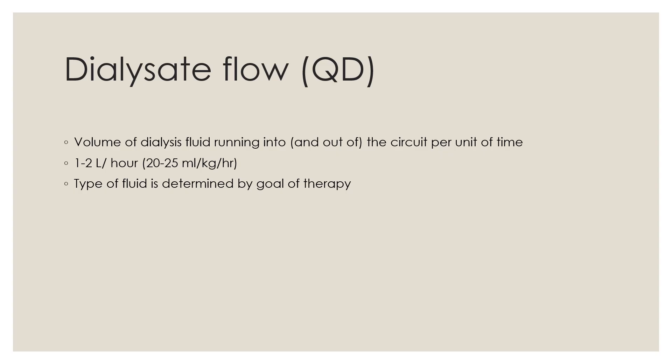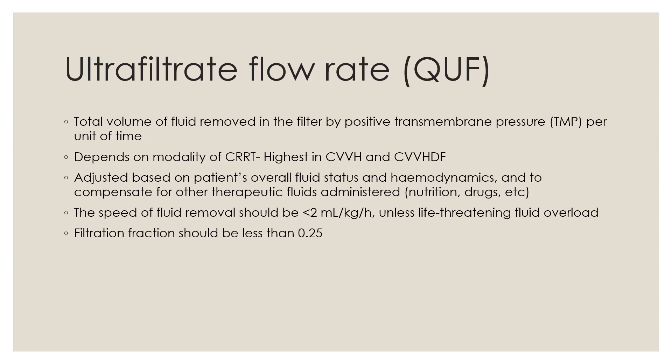Dialysate fluid is used for diffusive clearance and makes up part of the total effluent. The usual dose in adults is 1 to 2 liters per hour, or 20 to 25 ml per kg per hour. The type of dialysate is governed by the need of the patient and indication of therapy. Ultrafiltrate flow rate depends on the modality of CRRT and is adjusted based on the patient's overall fluid status and hemodynamics, and to compensate for other therapeutic fluids administered like nutrition and drugs.